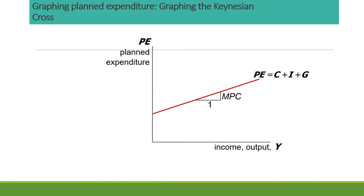To recapitulate: as a household, you earn income and pay taxes, so you can only consume after-tax income — disposable income. With disposable income, you can either consume or save. The proportion you spend on consumption is the marginal propensity to consume, and the proportion you save is the marginal propensity to save. The MPC plus the MPS must equal 1.